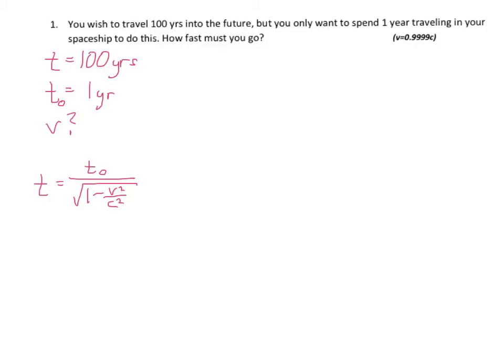So we're going to take our equation: T equals T-naught divided by the square root of 1 minus V squared over C squared. We're solving for V, which is currently squared, part of a fraction being subtracted from a whole number in a square root in the denominator of an equation. So as you can see, you're going to have to bring some algebra.